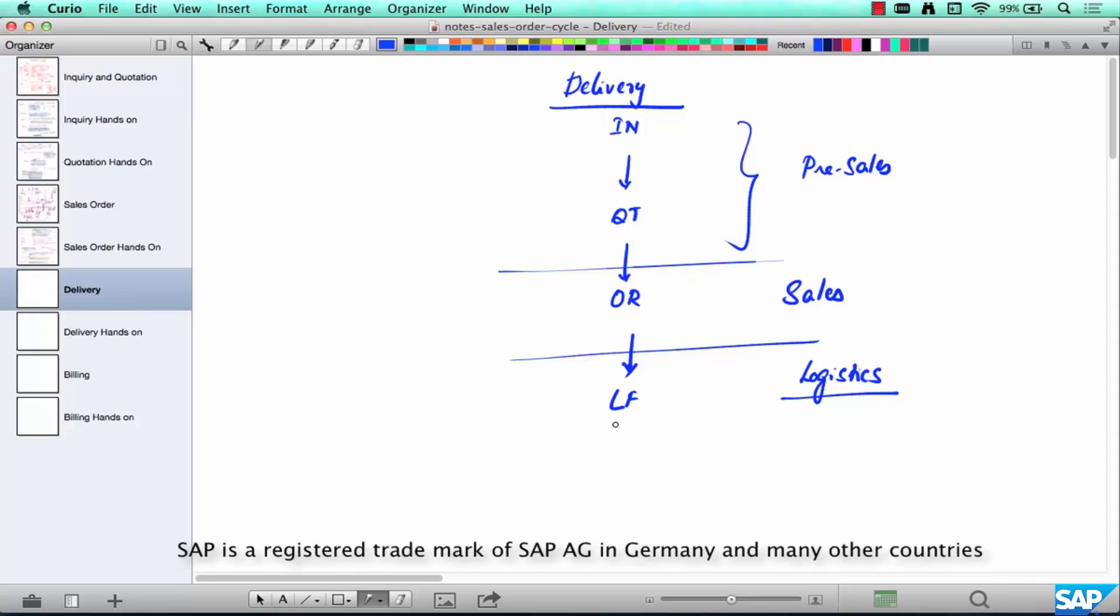What is there in a delivery? Most of the things in the delivery again are copied down from an order because we are trying to deliver the goods corresponding to the order that the customer has given us.